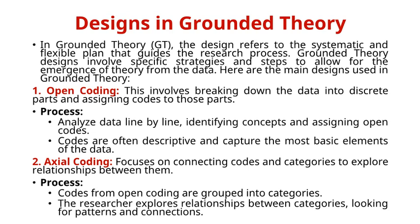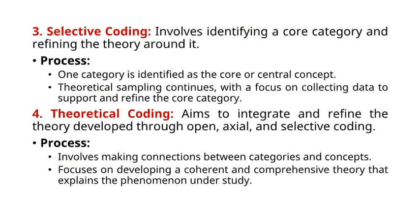2. Axial Coding: Focuses on connecting codes and categories to explore relationships between them. Codes from open coding are grouped into categories, and the researcher explores relationships between categories, looking for patterns and connections. 3. Selective Coding: Involves identifying a core category and refining the theory around it. One category is identified as the core or central concept, and theoretical sampling continues with a focus on collecting data to support and refine the core category. 4. Theoretical Coding: Aims to integrate and refine the theory developed through open, axial, and selective coding. This involves making connections between categories and concepts, focusing on developing a coherent and comprehensive theory that explains the phenomenon under study.